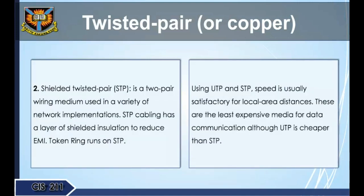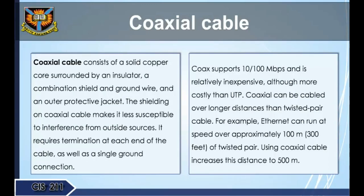Category 5 can transmit data at speeds up to 100 Mbps. Shielded twisted pair (STP) is a two-pair wiring medium with a layer of shielded insulation to reduce electromagnetic interference (EMI). Token Ring runs on STP. Using UTP and STP, speed is usually satisfactory for local area distances. These are the least expensive media for data communication, although UTP is cheaper than STP.